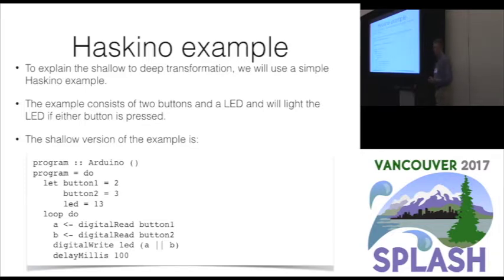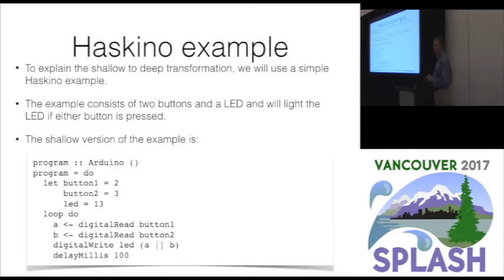Here's an example of the Haskino language — a simple example with two buttons and an LED. We have digital read, which takes the value of a pin the button is connected to and returns a Boolean indicating whether the button is pressed. We have digital write to output to a pin the LED is connected to. In this simple case, if either button is pressed, we light the LED, delay, and loop again. The DSL has an infinite loop construct. We also want to handle recursion, but for now I'll use the infinite loop construct to present one idea at a time.